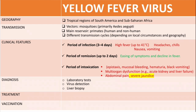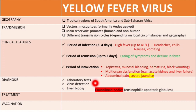On liver biopsy we see structures called Councilman bodies, which are eosinophilic apoptotic globules. These Councilman bodies are seen in both viral hepatitis and yellow fever virus infection.